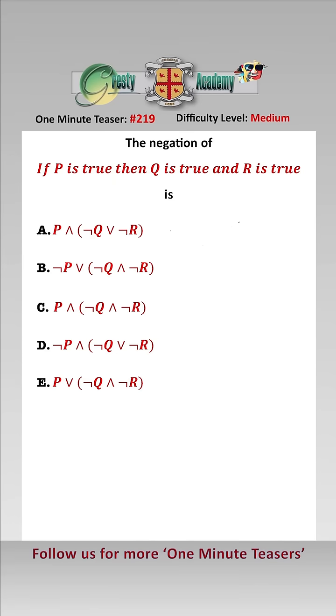This is a very common exam question, it's often answered incorrectly. So if P is true, then Q is true and R is true. And the way we write that is P implies Q and R. And another way to write that is not P or Q and R.